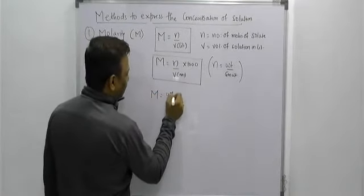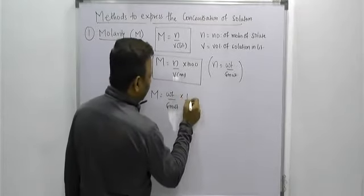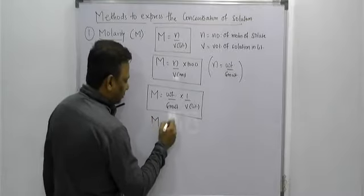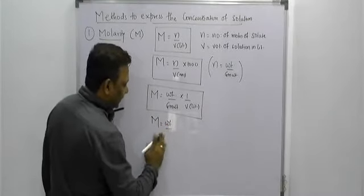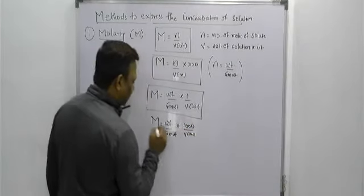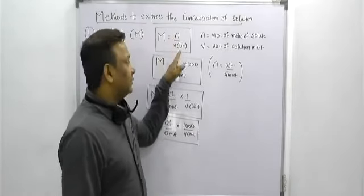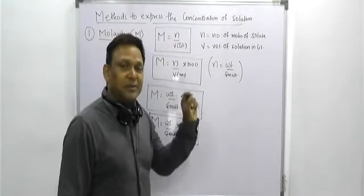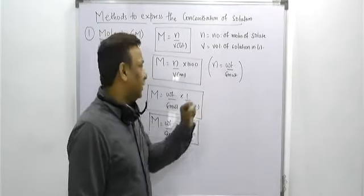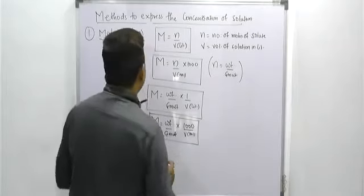Substituting this value of n into the molarity formula, we get: molarity equals weight divided by gram molecular weight. If the volume of solution is given in liters, use 1/V(L). If the volume is given in mL, use 1000/V(mL). So the extended formulas are: M = (weight / GMW) × (1/V in liters) or M = (weight / GMW) × (1000 / V in mL).